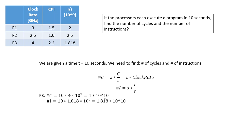Even though processor P3 completes the most cycles, it completes the lowest number of instructions. That's something to think about: how different processors decode instructions. Processor P3 is able to complete the most cycles because it has the highest clock rate, but the way it decodes instructions into its specific cycles is less efficient than the others, resulting in the fewest instructions.